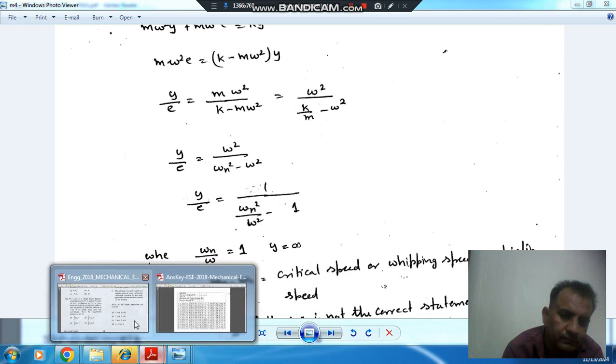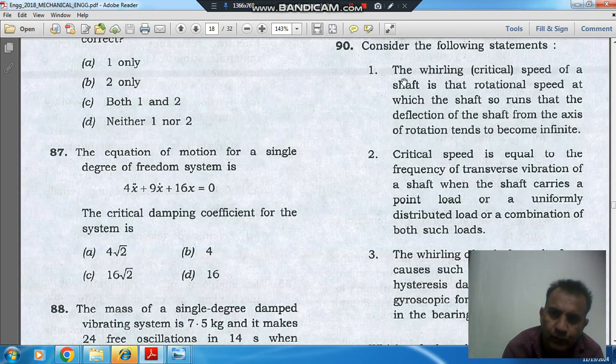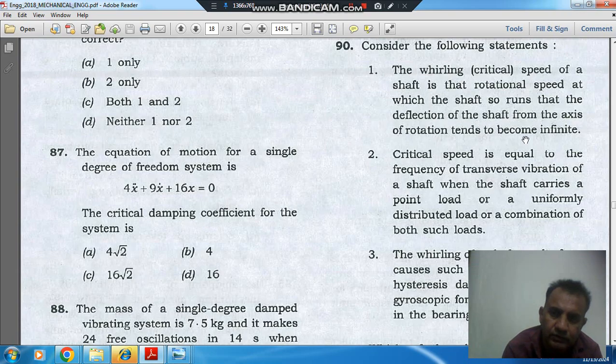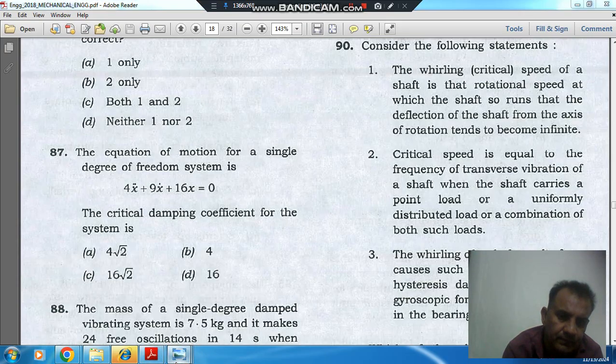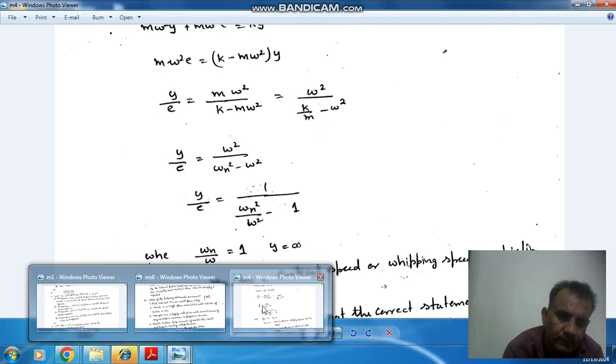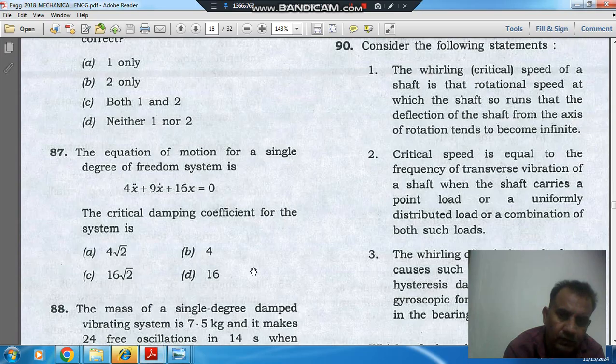So now, first statement is: the whirling speed of the shaft is that rotational speed at which the shaft so runs that the deflection of the shaft from the axis of rotation tends to become infinite. So that is correct. Y is becoming infinite, that is correct.